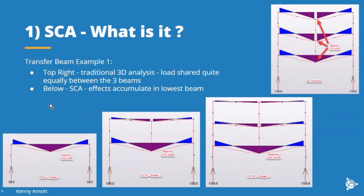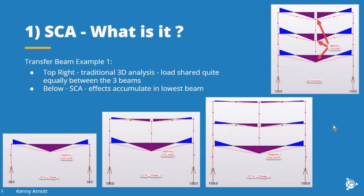If instead you construct the base level first and load it, the bending moment is roughly equivalent to the traditional result, though slightly higher due to less stiffness at the support. Adding the next level and loading it causes the level-two load to be shared roughly 50-50. Adding the third level shares that load roughly 33% to each level. You end up with a much higher bending moment at the bottom beam compared to the traditional 3D analysis — this is the classic example of why staged construction analysis makes a difference.